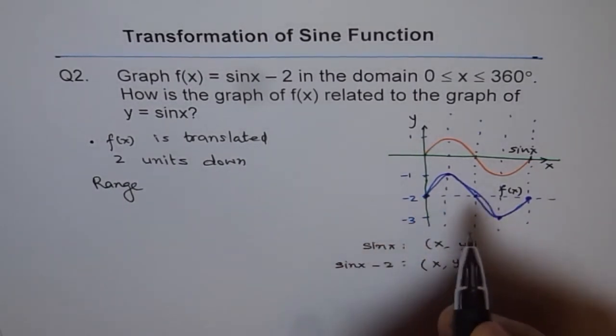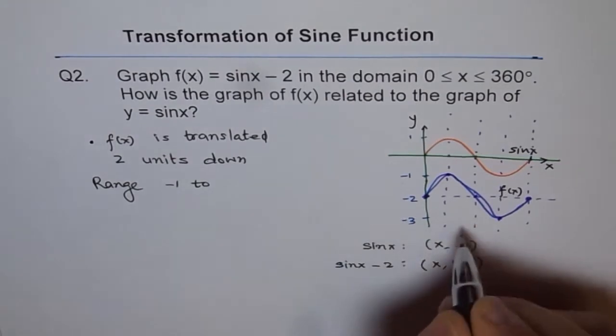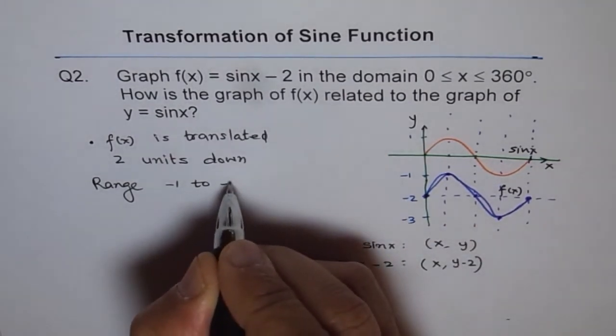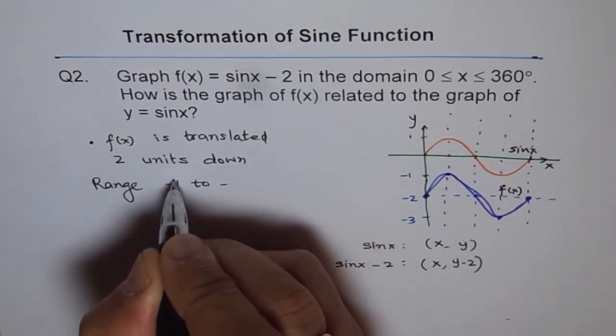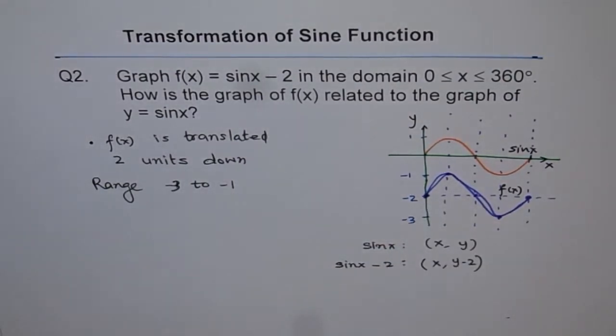So range changes, it becomes from -1 to -3. In fact, I should write -3 to -1, that being a lower value. So range changes from -3 to -1.